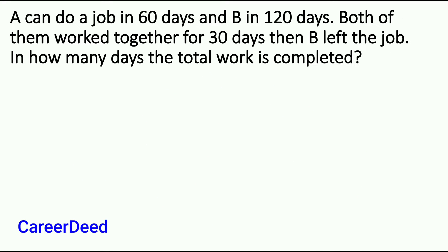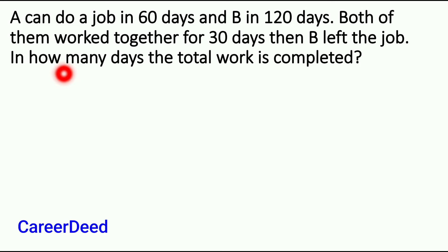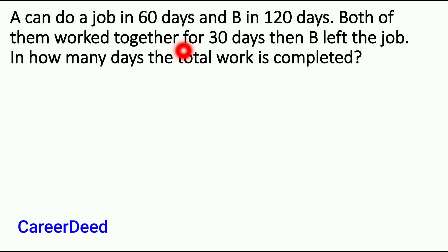Question number 2. A can do a job in 60 days and B in 120 days. Both of them work together for 30 days, then B left the job. In how many days is the total work completed? So here the question is asking for the total time from start to finish required to complete the whole job.